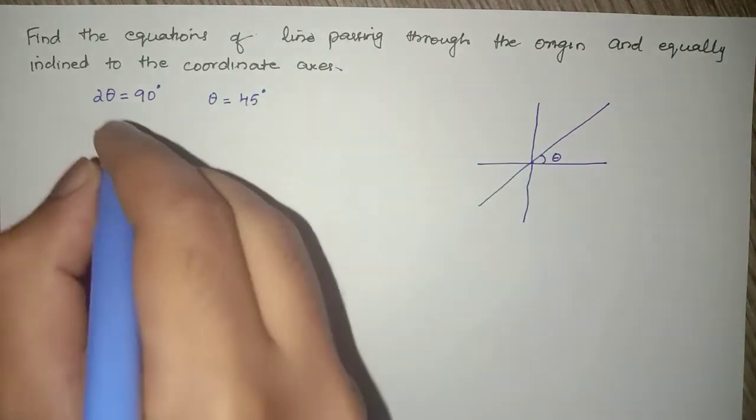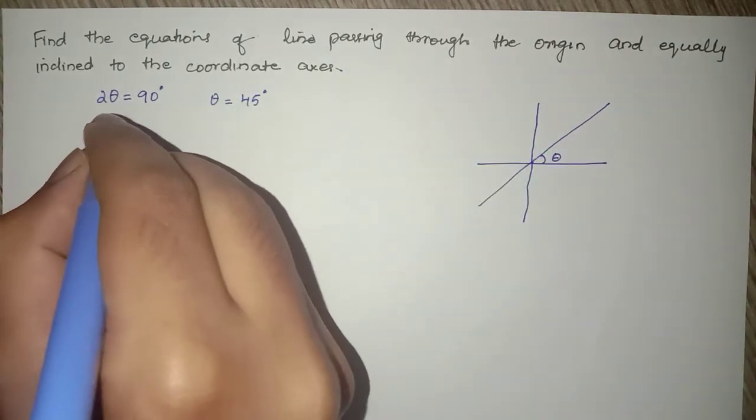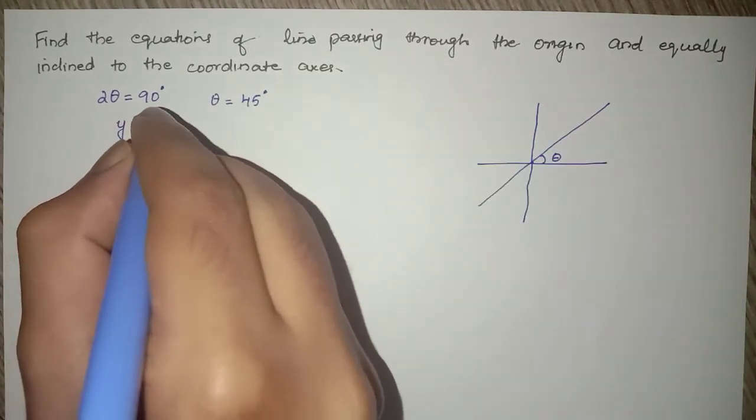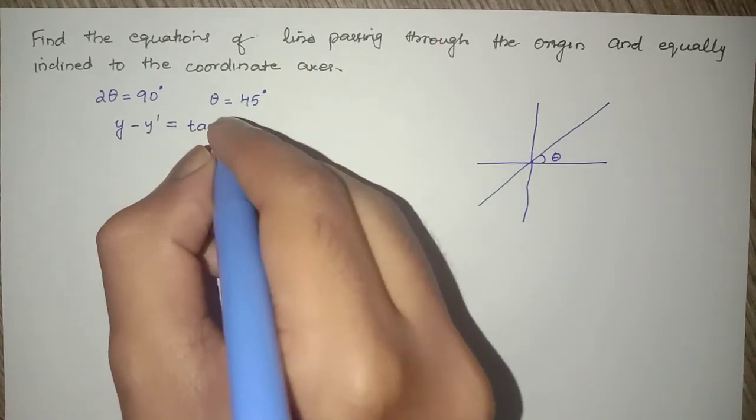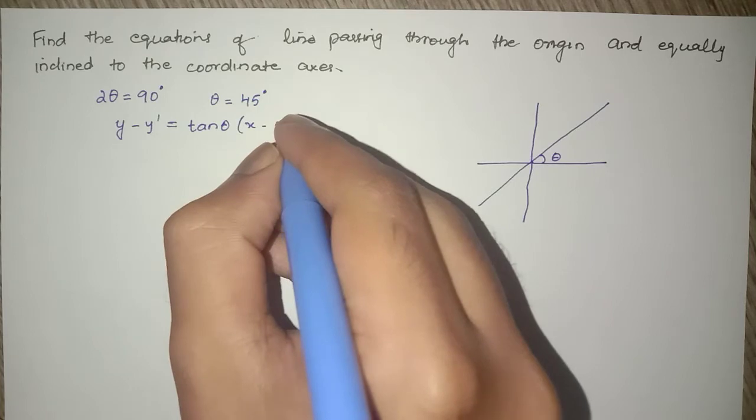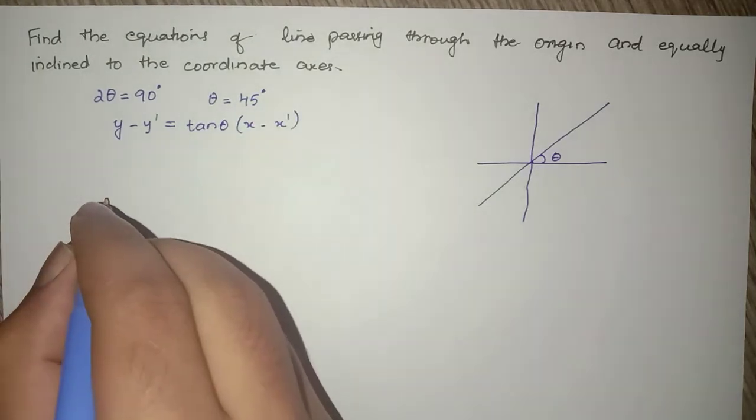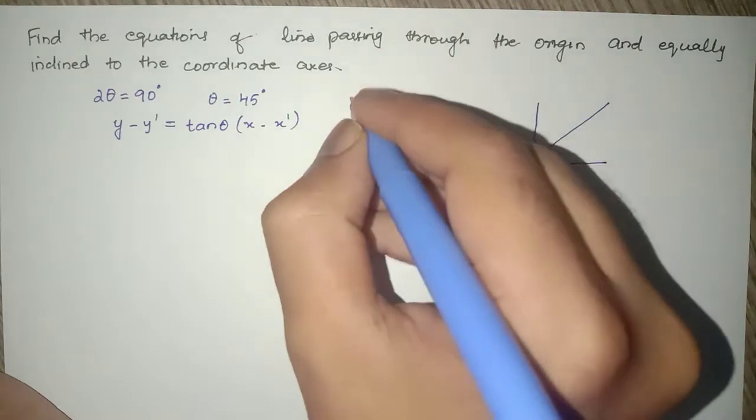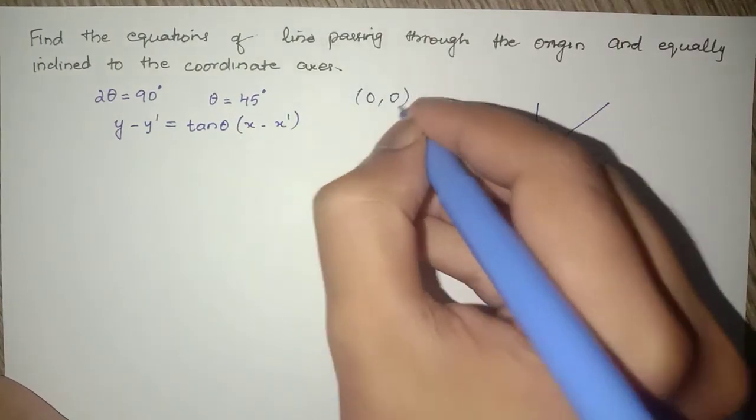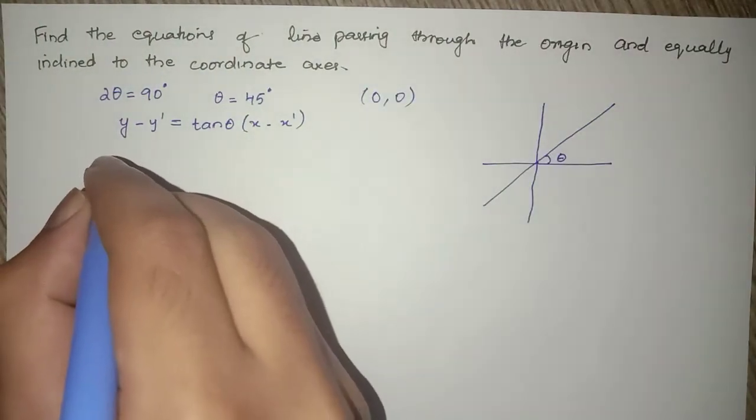We know the equation of line is y - y' = tan(θ)(x - x'). Here our line is passing through the origin, that is (0, 0), so if we substitute that here we get...